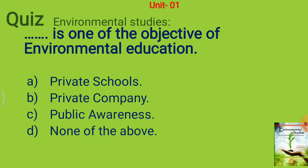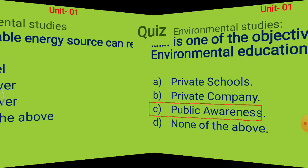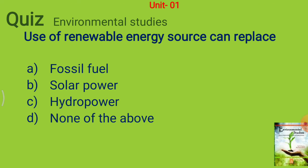Next question: dash dash dash is one of the objectives of environmental education. Options are private schools, private company, public awareness, or none of the above. The answer is public awareness.